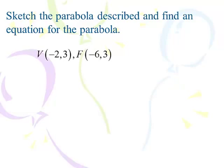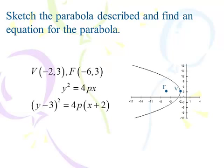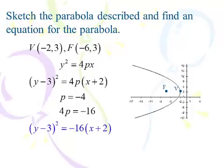Another example: vertex at (-2, 3) and focus at (-6, 3). Sketching it out, the focus is to the left, so this is a horizontal parabola — y squared equals 4PX. The equation starts as (Y - 3)² = 4P(X + 2). Walking the distance from vertex to focus gives P = -4. So 4P = -16, and the equation is (Y - 3)² = -16(X + 2).